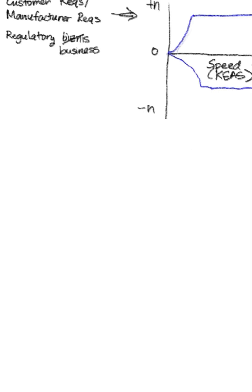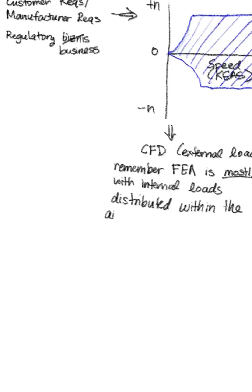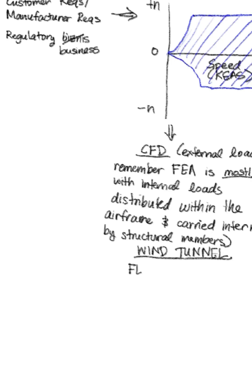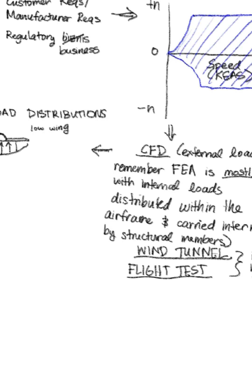So you can get your aerodynamic loads through lots of different methods. There's computational methods like CFD. This is for the external aerodynamic loads rather than the internal loads. And essentially you want to get your air load distributions, like your lift distributions, and you can use wind tunnel and flight tests to verify your data points. But essentially, the VN diagram shows your aerodynamic and inertial loads.